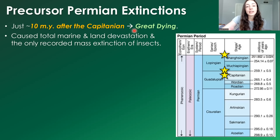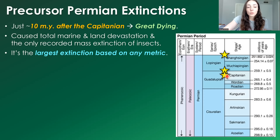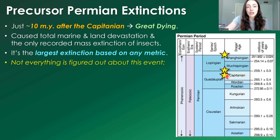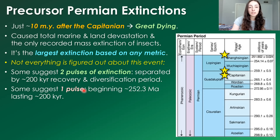The end Permian caused total marine and land devastation and is the only recorded mass extinction of insects in Earth's history. It is the largest mass extinction based on any metric. Some suggest it represents two pulses of extinction separated by about 200,000 years of recovery, while others suggest it was one pulse beginning around 252.3 million years ago and lasting around 200,000 years.